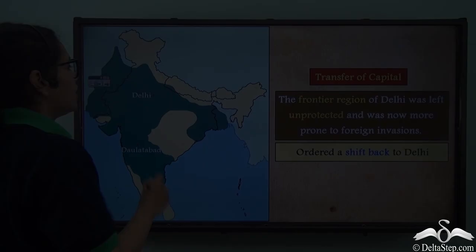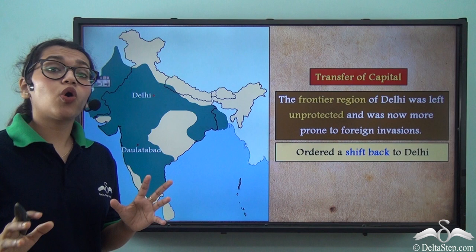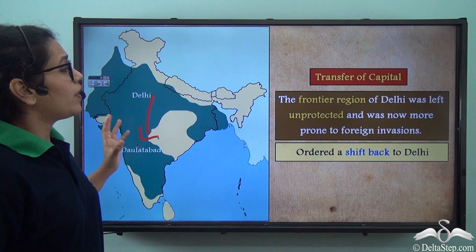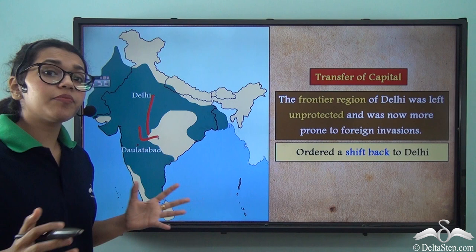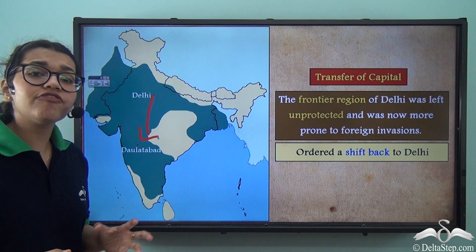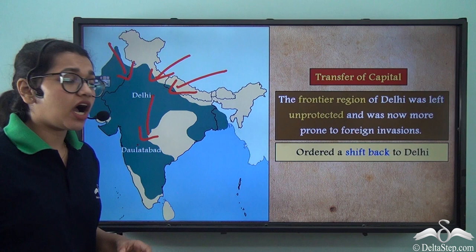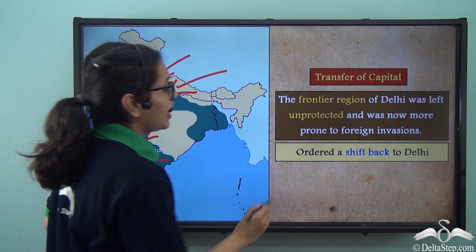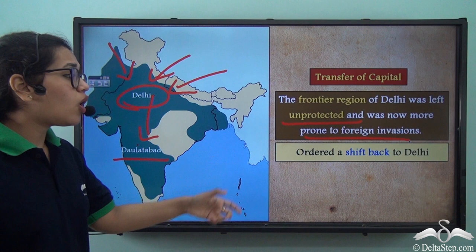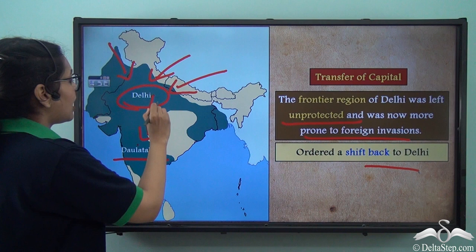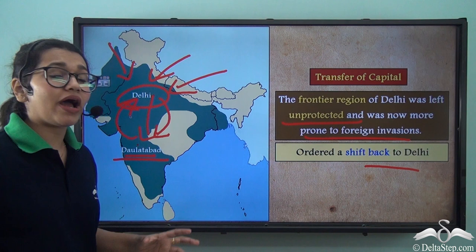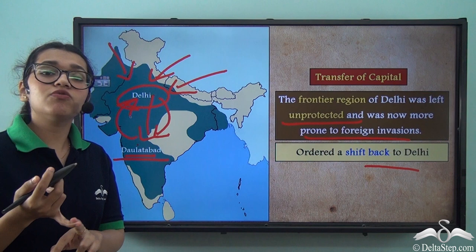There were significant consequences of shifting the capital. Delhi had acted as a frontier, keeping the empire safe from foreign attacks. When he moved to Daulatabad, Delhi was left open and unprotected, making it prone to foreign invasions. Because of this, he ordered a shift back to Delhi. This to-and-fro movement of his subjects was time-consuming, expensive, and resulted in many deaths during travel — a very big failure on the part of Muhammad bin Tughlaq.